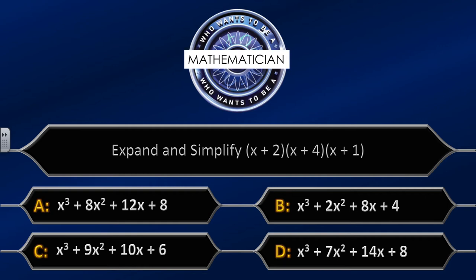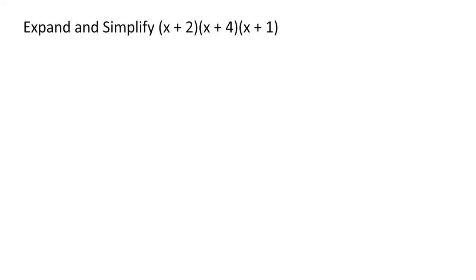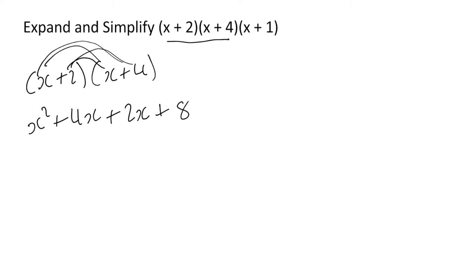The correct answer is D: x³ plus 7x² plus 14x plus 8. To expand and simplify, first expand the first two brackets (x plus 2)(x plus 4): x times x gives x², x times 4 gives 4x, 2 times x gives 2x, 2 times 4 gives 8. Simplifying further: x² plus 6x plus 8.